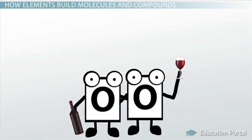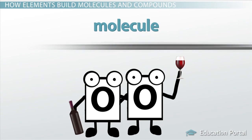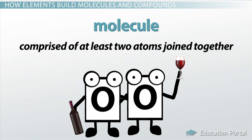When social elements hang out together and link up, they form a molecule. A molecule is comprised of at least two atoms joined together. Like the letters that build different words, elements build different molecules.